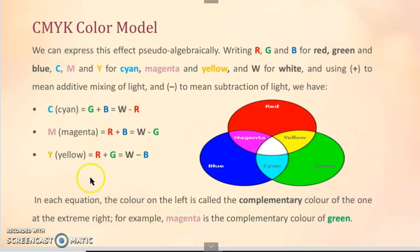For example, here we will take an example of the second equation. Magenta is the complementary color of green. From this equation, you can find out which color is the complementary color of which color. Cyan is a complementary color of red, magenta is complementary color of green, and yellow is a complementary color of blue.